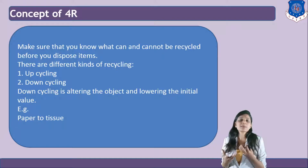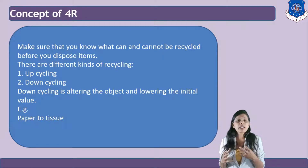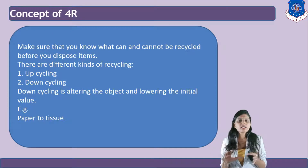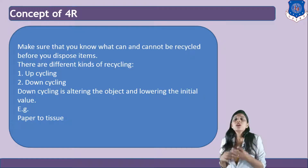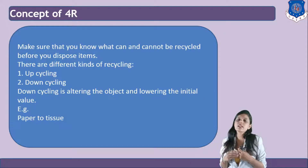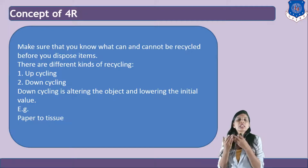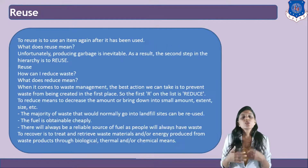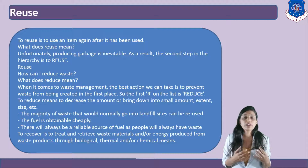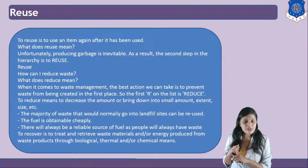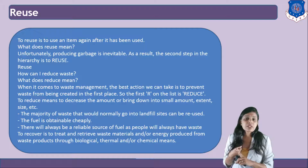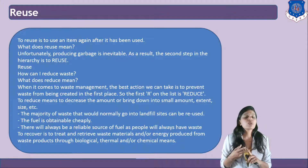You should also know what is upcycling and what is downcycling. Upcycling is when you increase the value of a product — for example, converting aluminum into a plane. Downcycling is altering the object and lowering its initial value — for example, converting paper into tissue lowers the value. Upcycling increases value and downcycling decreases value, but both involve recycling the material or product.